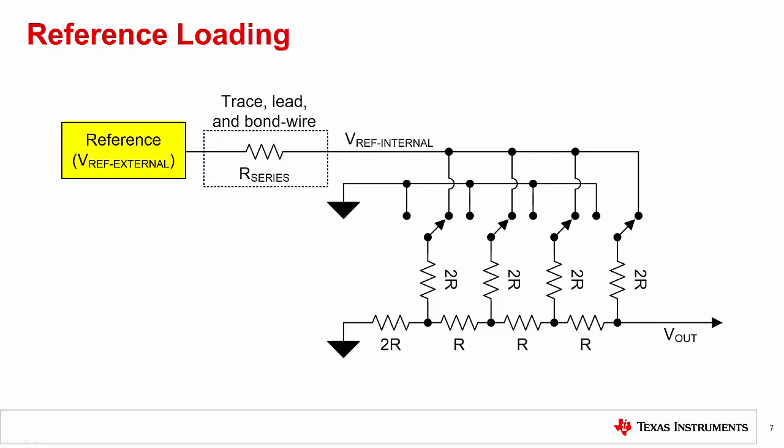Let's look at what happens to the reference voltage when this load current changes. Consider a DAC with an external reference pin. Similar to the power supply pin we just discussed, all physical components have a series resistance. Rseries, as shown in the figure, is comprised of the resistance created by the trace, the package lead, and bond wire, as well as any series resistance in the die itself.